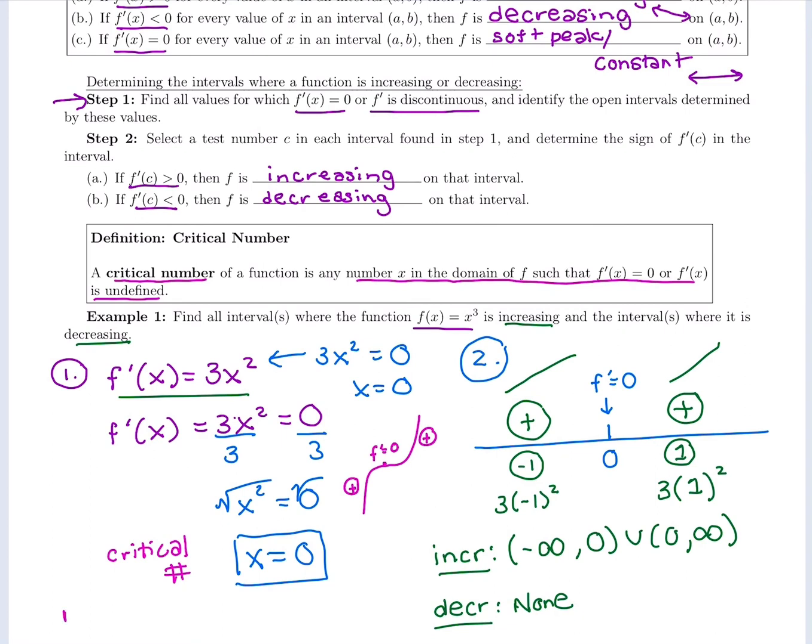So for this one, we would say no relative extrema. Kind of a boring example because we don't have any sign change. It's increasing to a 0 derivative to increasing again, but we'll look at more examples where we see some sign change and are able to make conclusions about extrema.